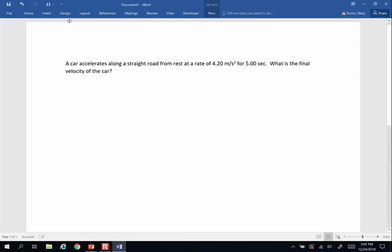A car accelerates along a straight road from rest at a rate of 4.2 meters per second squared for 5 seconds. What is the final velocity of the car? Now when you are faced with a kinematics problem like this, the very first thing you do is write down what you know. A car accelerates along a straight road from rest. Watch out for words like from rest, because from rest means the original velocity is zero. Yeah, it's sneaky, isn't it? From rest means original velocity is zero.